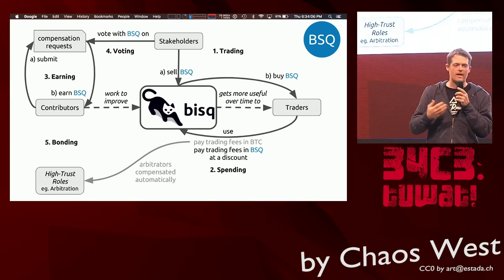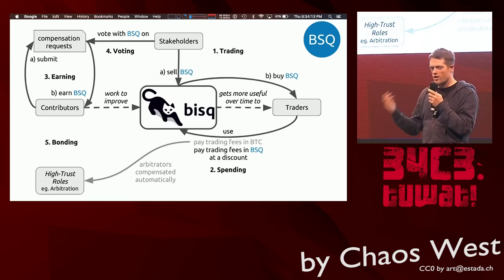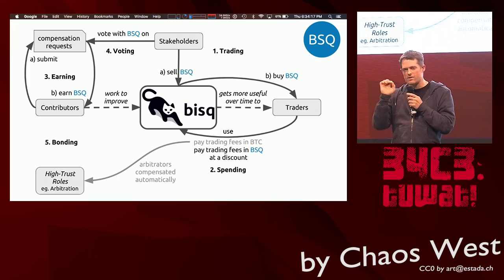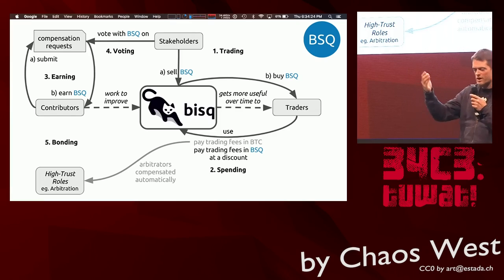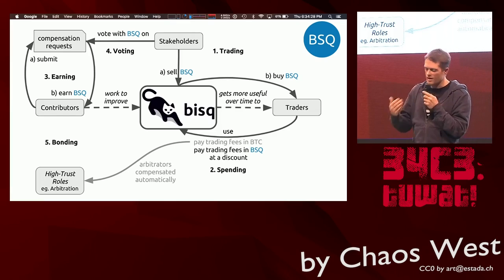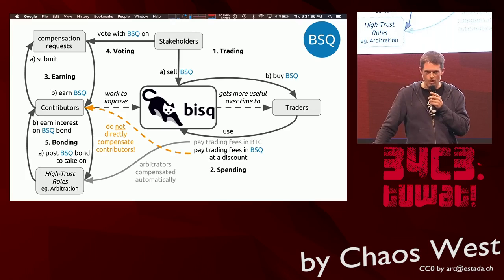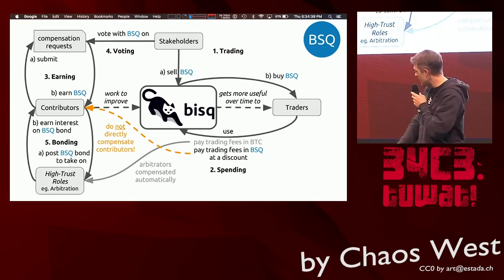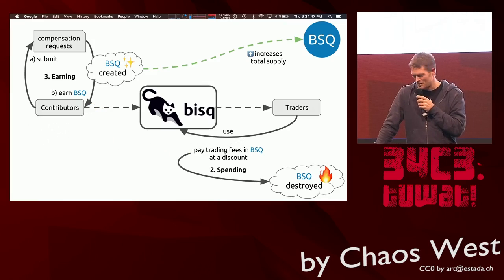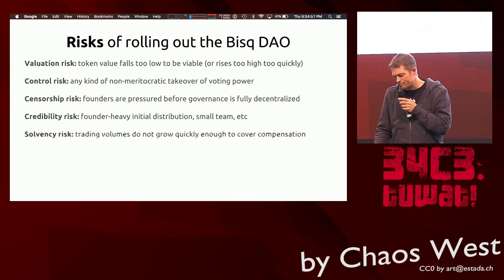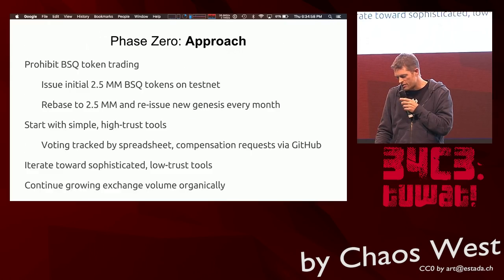The fourth function is voting: people who already have BSQ use that BSQ as a voting chip to green-light or reject compensation requests. Stakeholders decide who gets new BSQ. The fifth function is bonding: for high-trust roles in the DAO — such as an arbitrator, who could wreak terrible havoc if acting badly — those roles can bond in BSQ, putting up a very large amount of BSQ that can be confiscated if they act badly. There's a lot here I'm moving through quickly, but you can find it all in the paper. The link is bisq.network/phase-zero — the Phase Zero paper: a plan for bootstrapping the Bisq DAO.